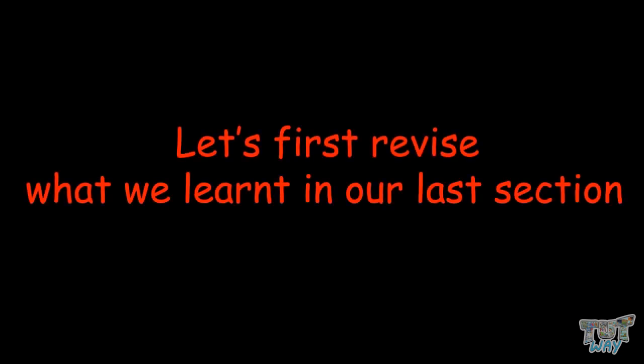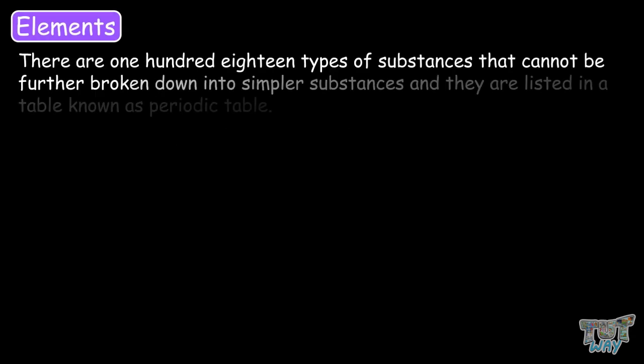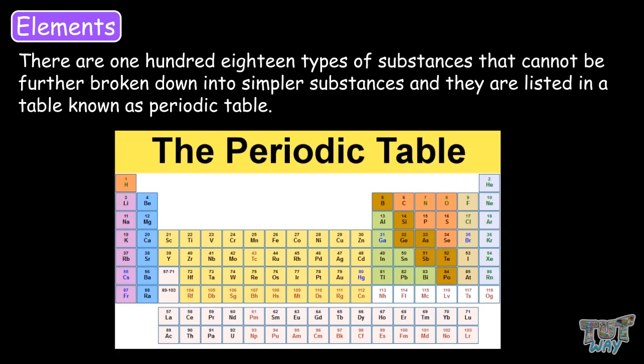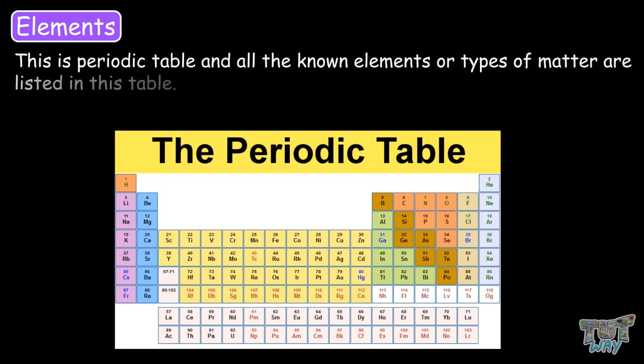Let's first revise what we learned in our last section. There are 118 types of substances that cannot be further broken down into simpler substances, and they are listed in the table known as the periodic table. This is the periodic table, and all the known elements or types of matter are listed in this table.